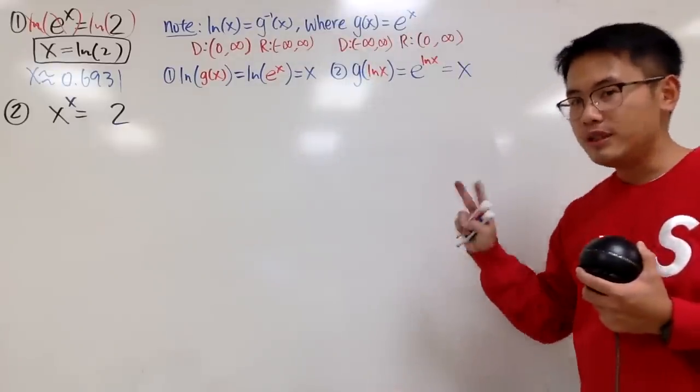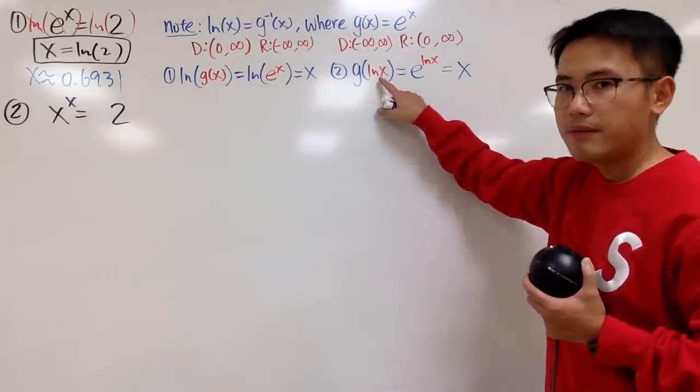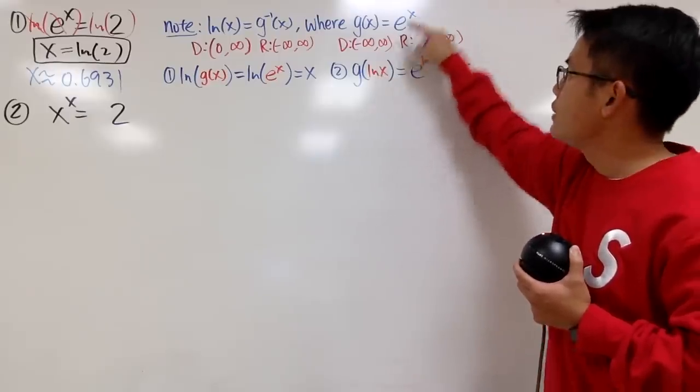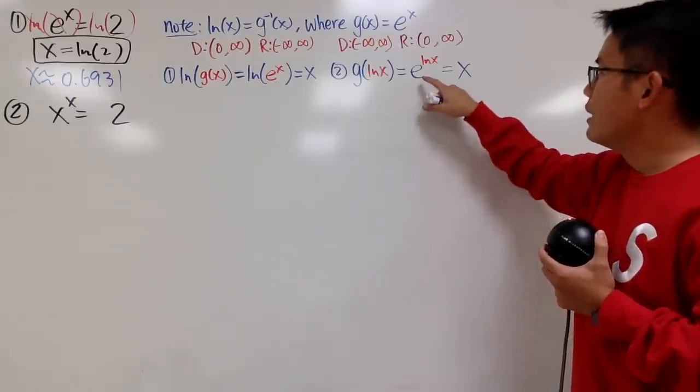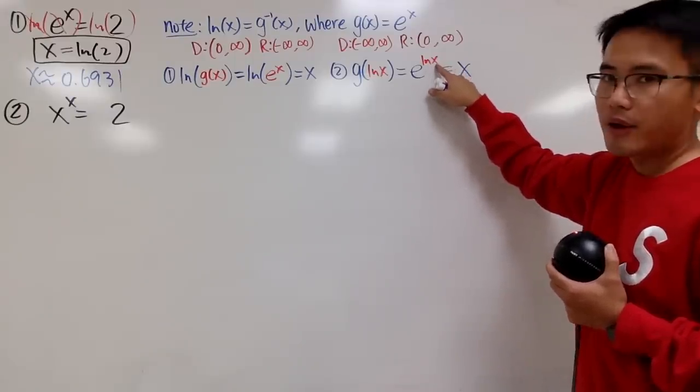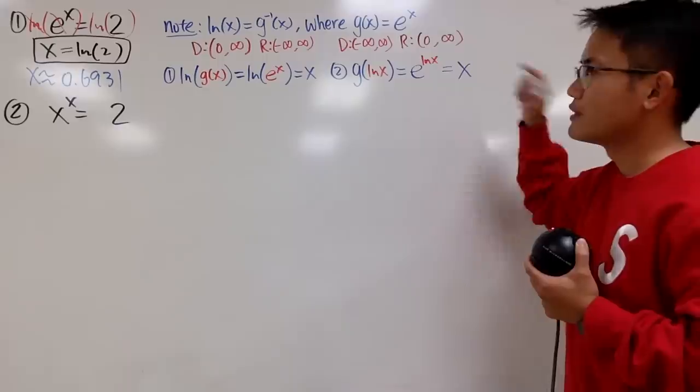Likewise, if you do it the other way around, if you have g on the outside of ln, and you can put ln into this x, because I entered the ln into the x right here. So you're saying e to the ln of x, right here. Once again, they cancel, you just get x.